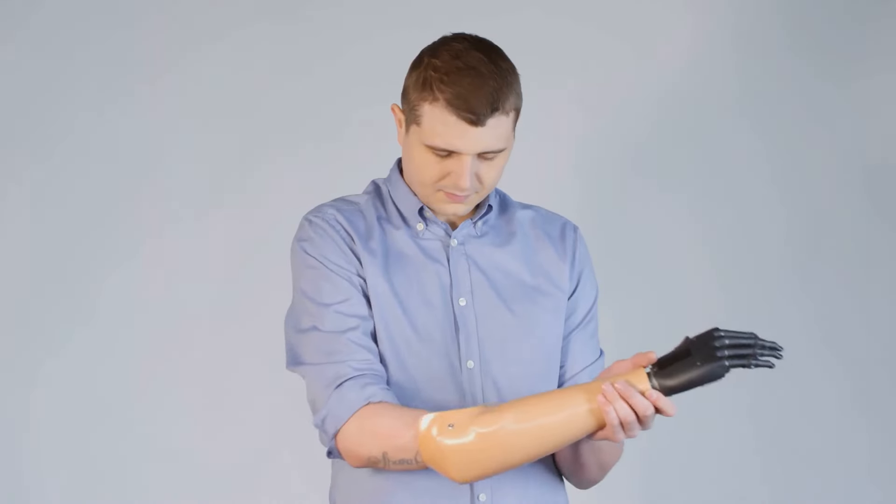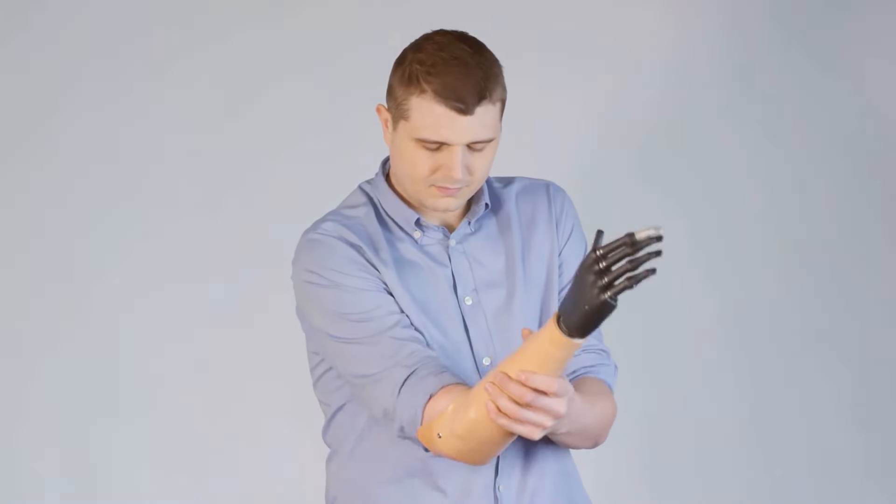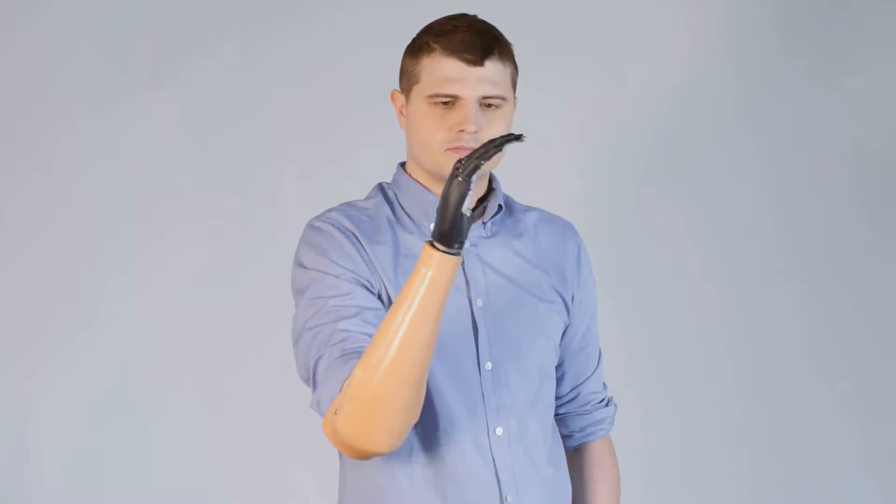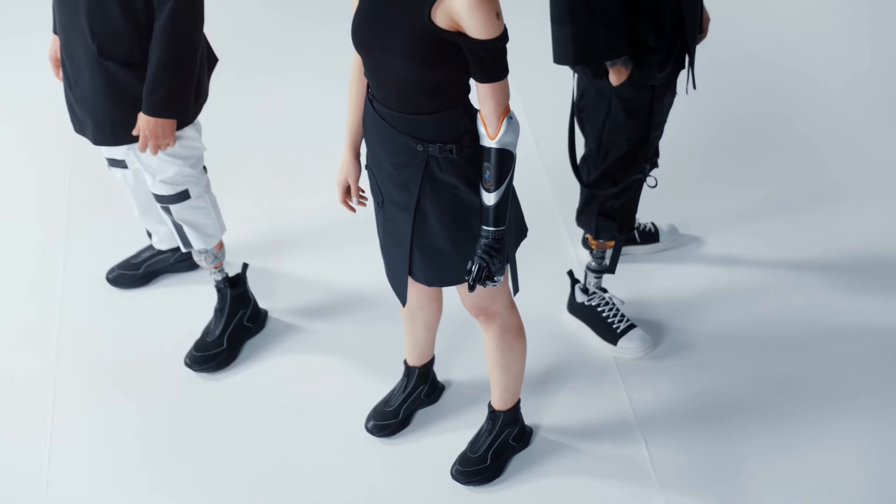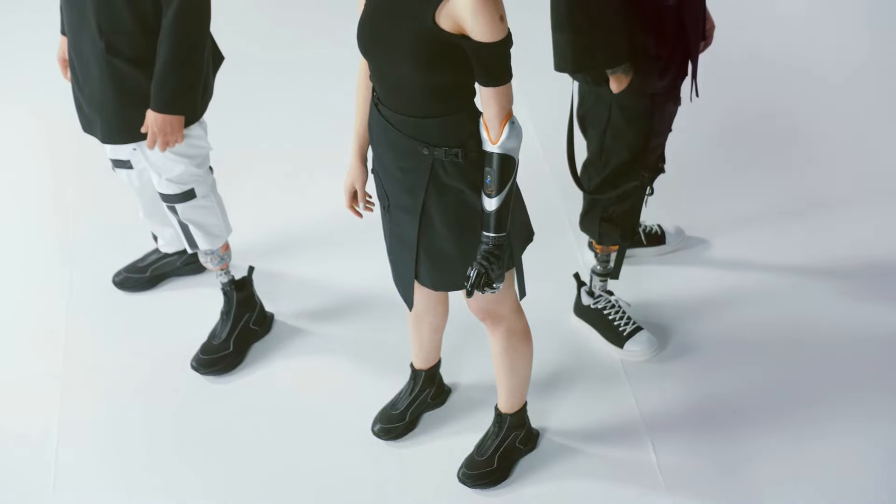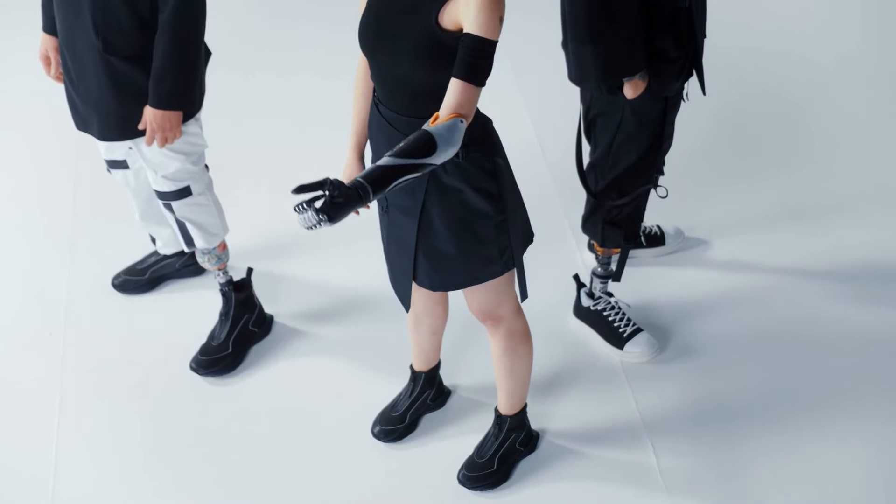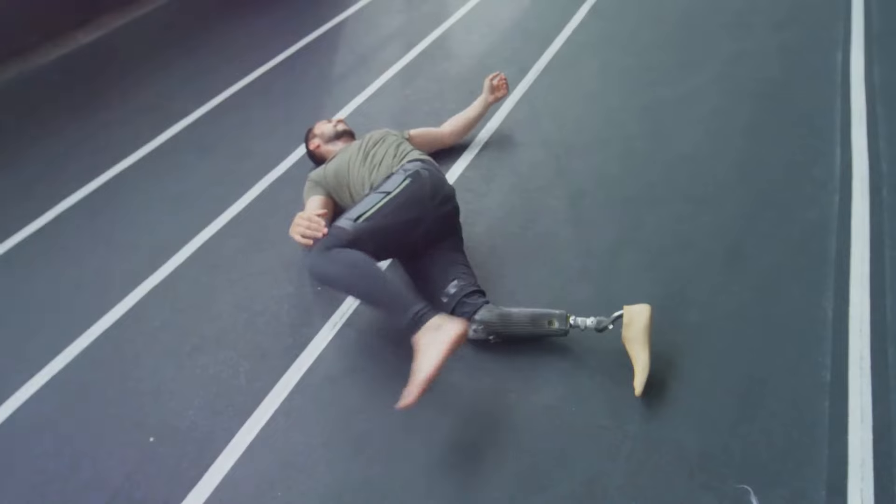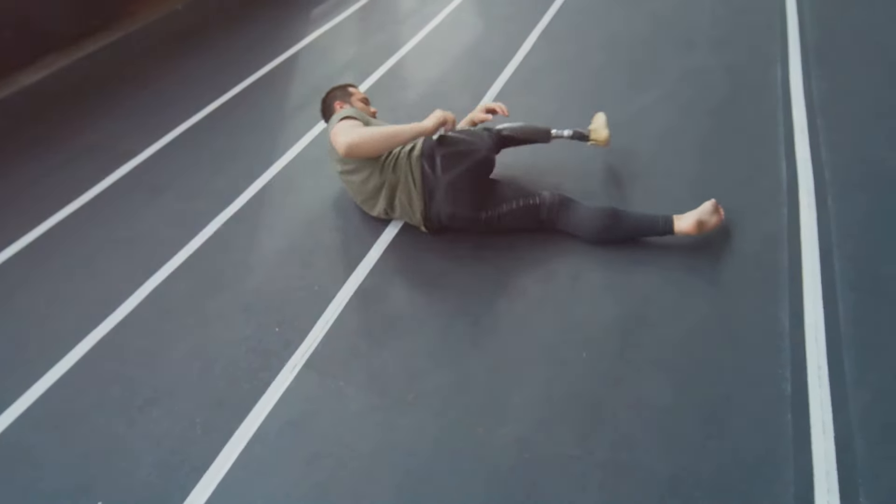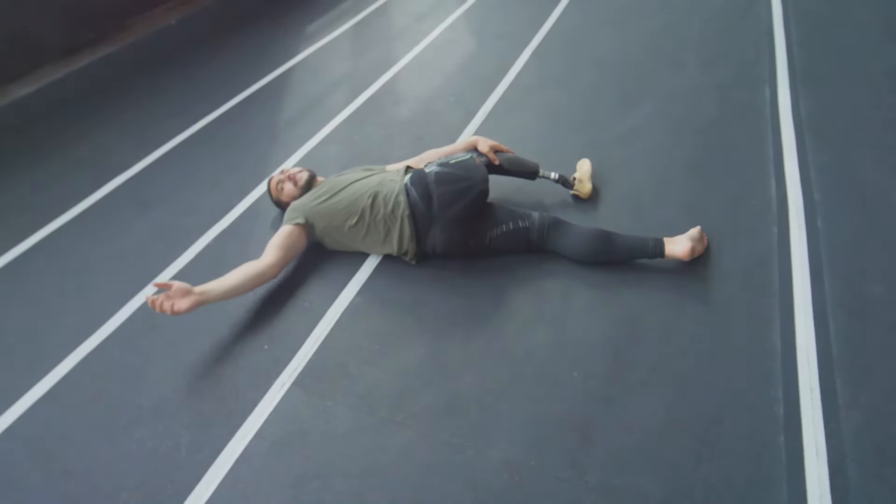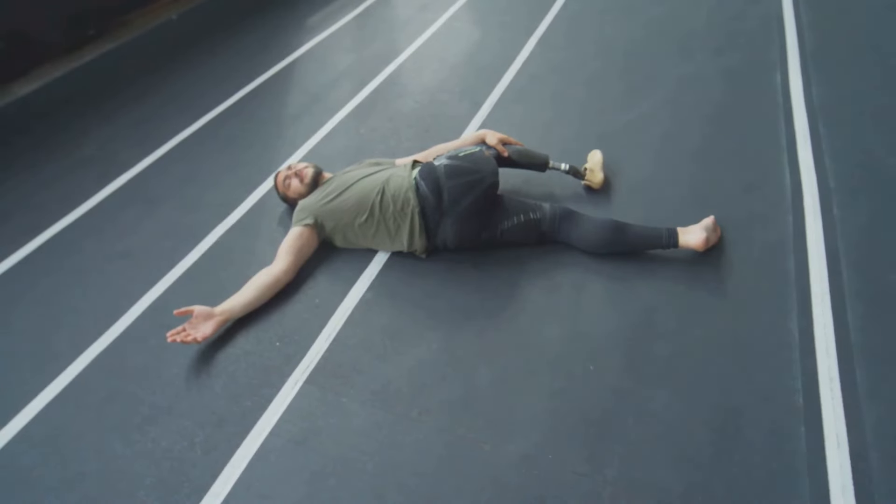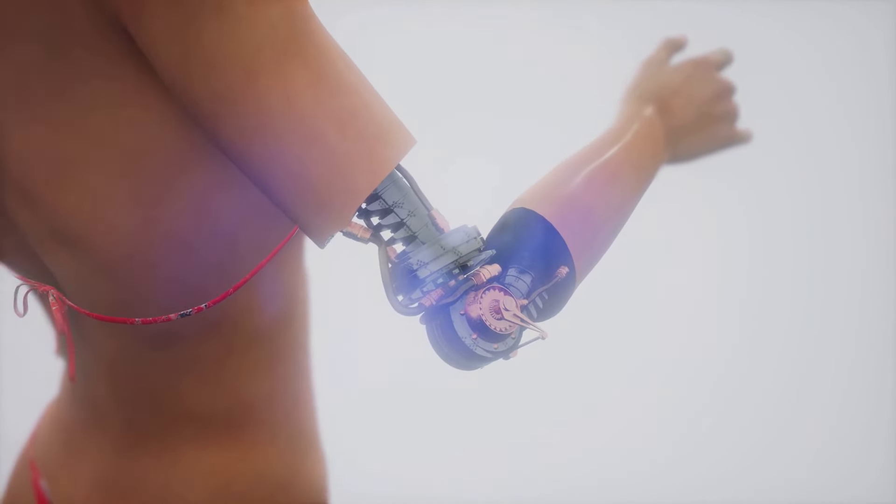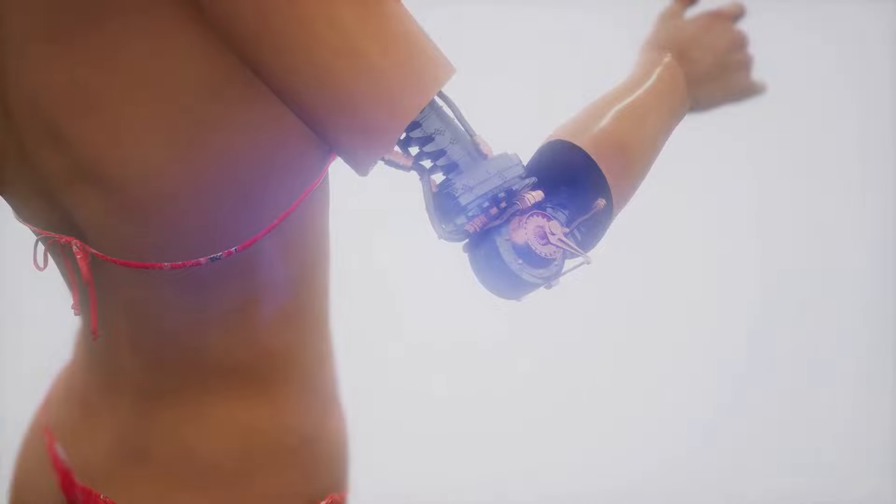Imagine prosthetics controlled by thought, seamlessly integrated with the nervous system, offering strength and dexterity that surpasses natural limbs. Today, researchers are developing bionic limbs with advanced sensors and actuators capable of mimicking the intricate movements of a human hand. Athletes with prosthetic limbs are now competing at the highest levels, shattering records and redefining the limits of human potential. This fusion of technology and art is blurring the lines between disability and ability, challenging our very notions of what's normal.